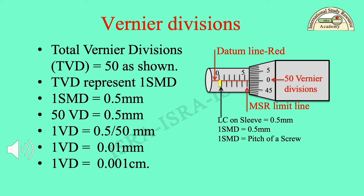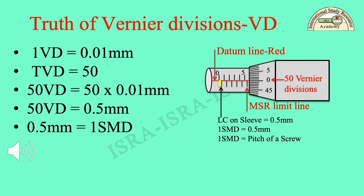Or 1 VD is equal to 0.001 cm. Truth of Vernier divisions: you have discovered that 1 VD on this thimble is equal to 0.01 mm. There are TVD equal to 50 on this thimble. Therefore 50 VD is equal to 50 times 0.01 mm, which equals 0.5 mm. Since 0.5 mm equals 1 SMD, this confirms the truth of VD.